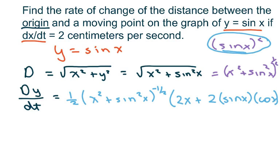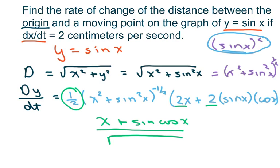Now when you clean all this up, you notice that this one half will divide both of these pieces. So on the numerator, we're just going to get x plus sine of x cosine of x over the square root of x squared plus sine squared x.